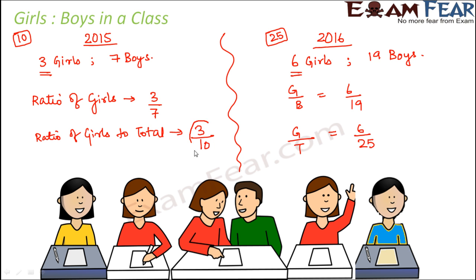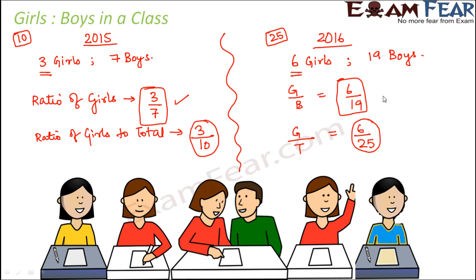When you actually start calculating and comparing these values — whether 3 by 10 is bigger or 6 by 25 is bigger, and whether 3 by 7 is bigger or 6 by 19 is bigger — you find that 3 by 7 is greater than 6 by 19. This shows that in 2015 the number of girls with respect to boys was better: for every 7 boys there were 3 girls, whereas in 2016 for 19 boys there are only 6 girls. So the ratio has actually decreased.